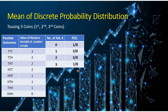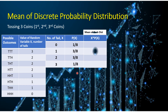So we are here to compute for the mean of the discrete probability distribution. But for us to compute for that mean, first we must get the product of our x and the probability P(x). So we have here another column where you're going to multiply your x — the number of tails — times the probability of your random variable.